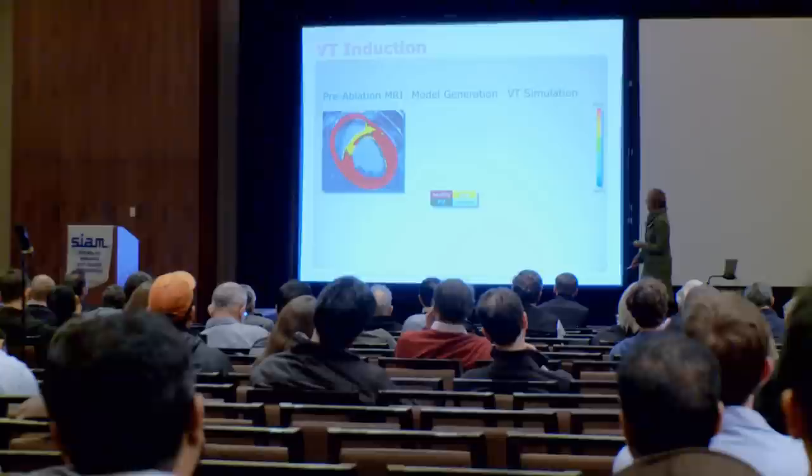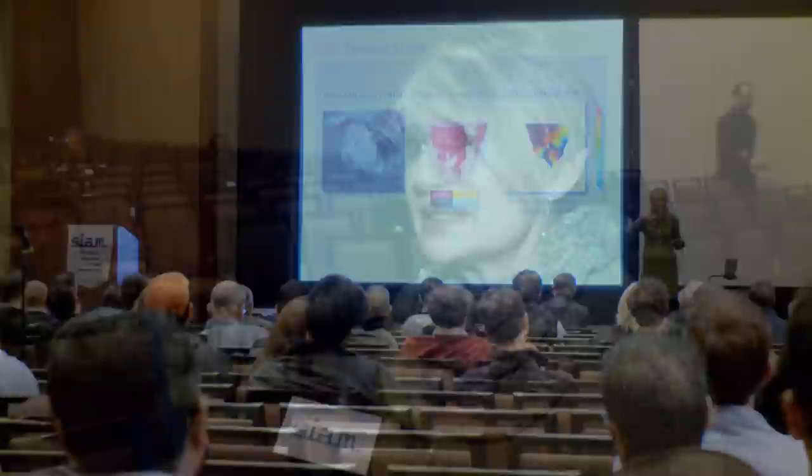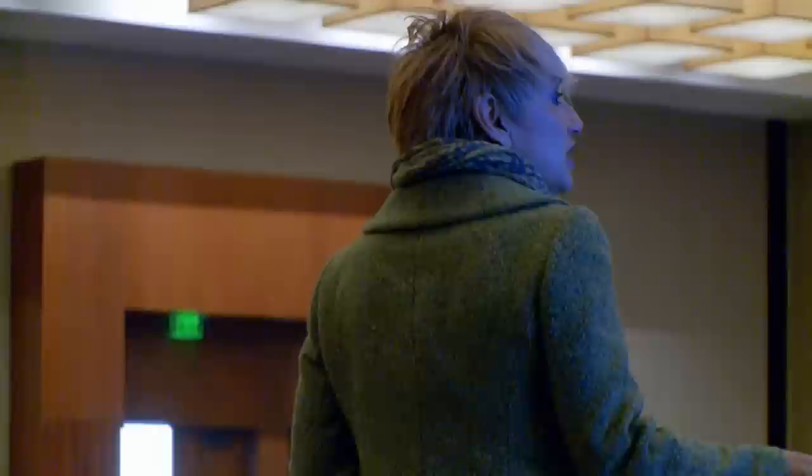We are conducting simulations that are patient specific. We are taking MRI images of a patient's heart and generating a model of the heart in which we are representing all the possible arrhythmias that can occur. Then we are trying to predict whether this patient will have an arrhythmia, basically stratifying for risk. And in case these patients have an arrhythmia, we also want to tell the doctor what would be the most appropriate therapy for this specific patient's heart.